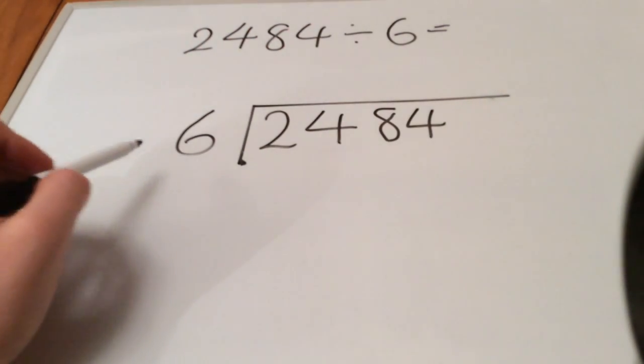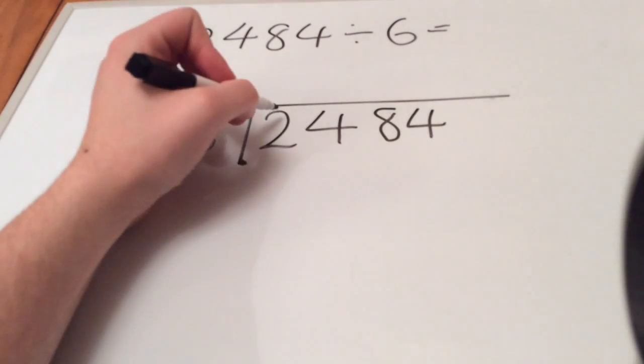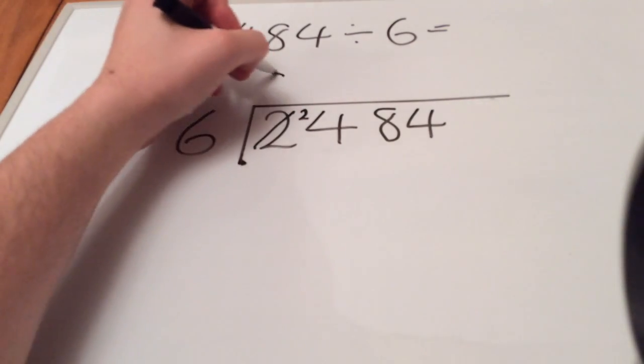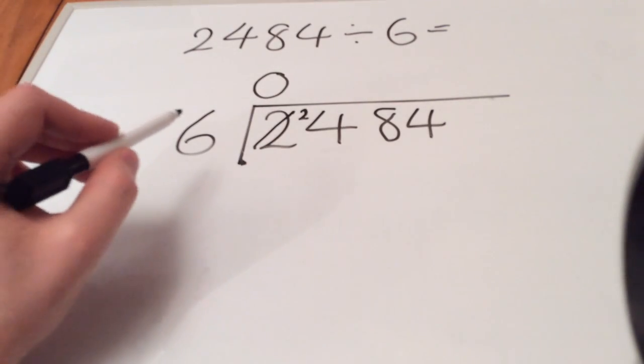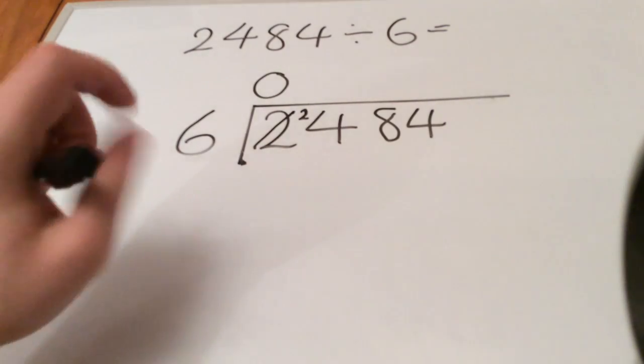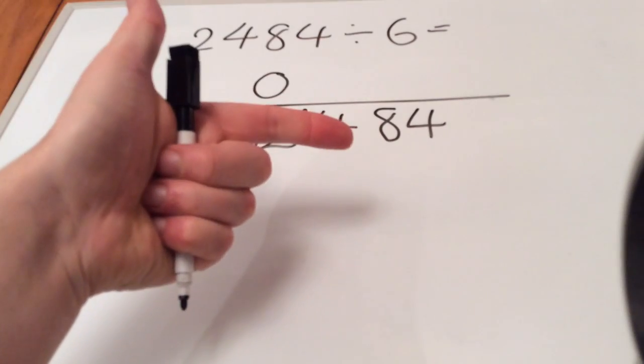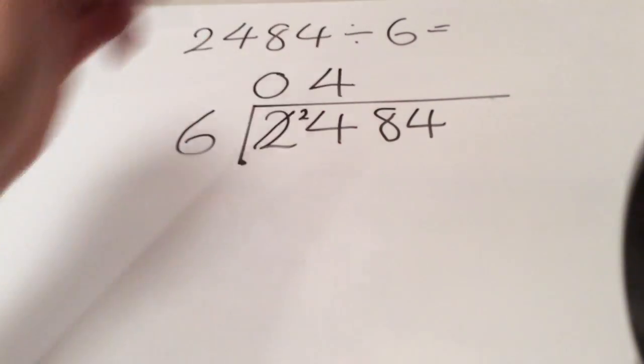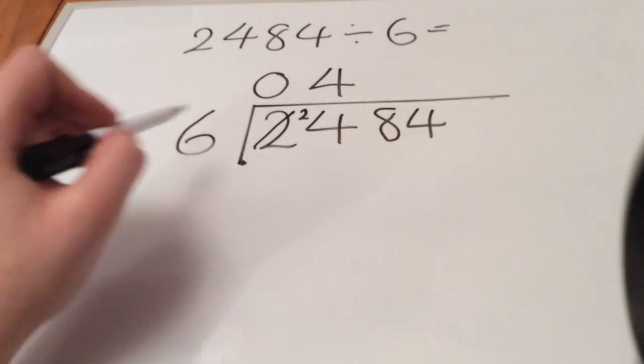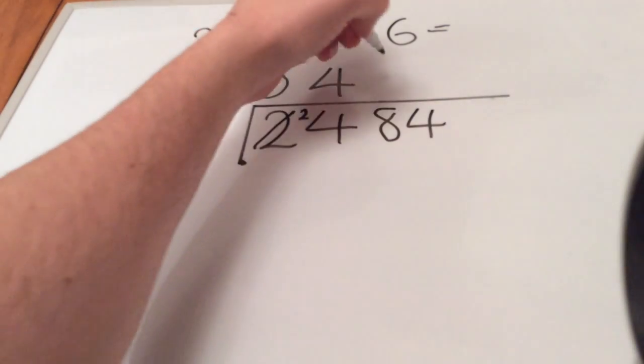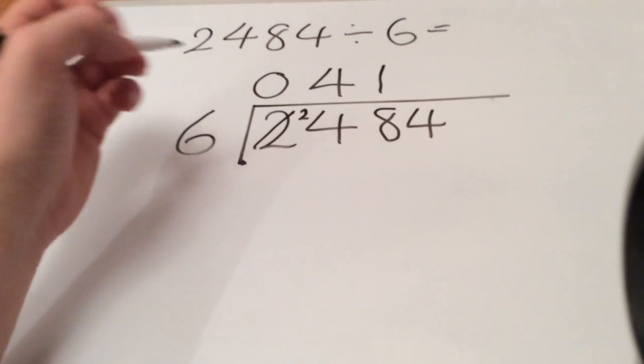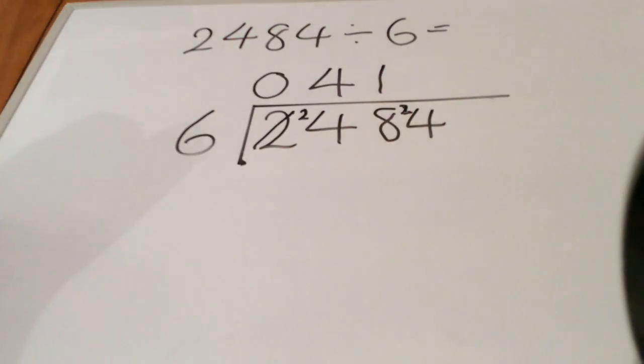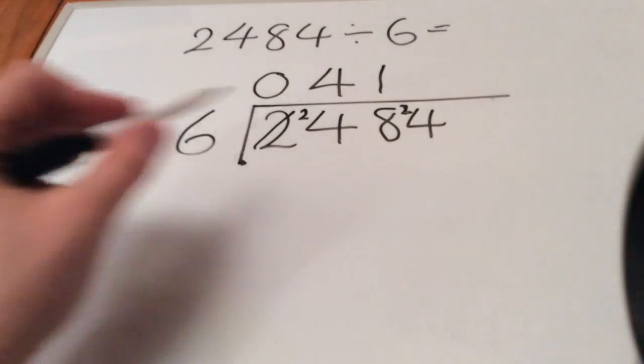How many times can we get 6 into 2? Well we can't, so we need to carry the 2 over and we got 0 there. How many times can we get 6 into 24? 6, 12, 18, 24 - 4 times. How many times can we get 6 into 8? Well we can do that once and then we have a remainder of 2, so the little 2 is carried over.